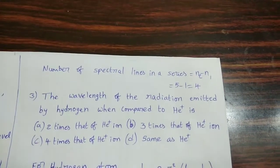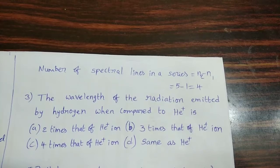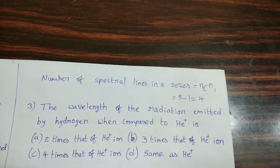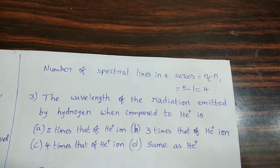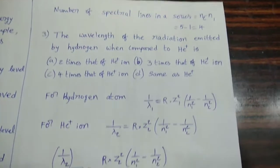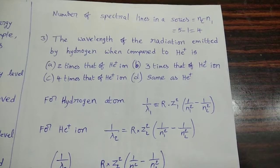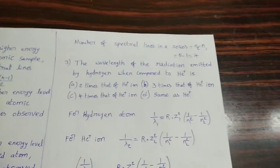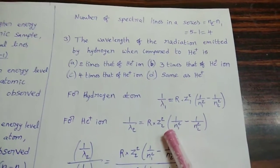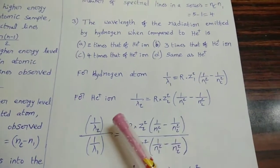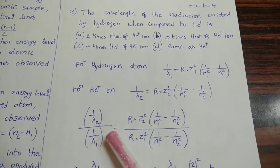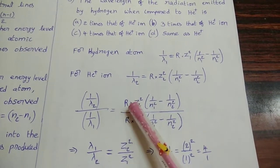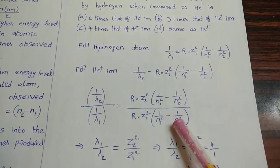See the next question. The wavelength of the radiation emitted by hydrogen when compared to He+ ion. For hydrogen atom, the Rydberg equation is 1/λ₁ = R × Z₁² × (1/N₁² - 1/N₂²), and for He+ ion this is the same Rydberg equation. Now we want the ratio: (1/λ₂)/(1/λ₁) and the corresponding right-hand side formula. The Rydberg constant R gets cancelled, and these two terms get cancelled.